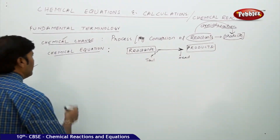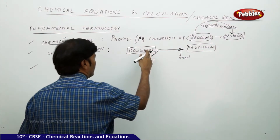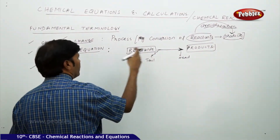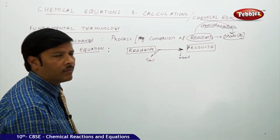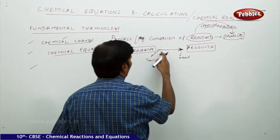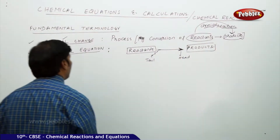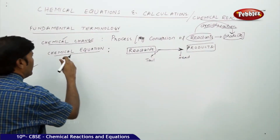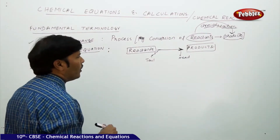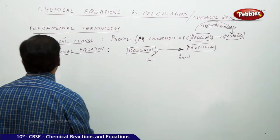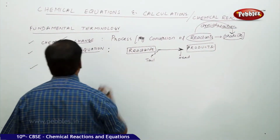A chemical equation is given by two components: reactants and products, separated by an arrow made up of a head and a tail. From a chemical equation, during the chemical reaction, we can gather all the information from reactants to products.